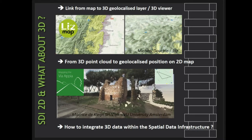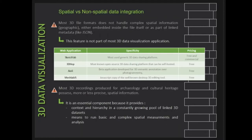As far as we know, two types of solutions are being developed today. The first is to connect a 3D viewer within a web mapping application like Lizmap, for example, to show georeferenced layers in 3D. The second approach is to map in 2D over a 3D point cloud with spatial information, as is the case in the remarkable project APIA made by the University of Amsterdam. But what we would like to do is truly integrate 3D data as real spatial data within a spatial data infrastructure like GeoOrchestra.